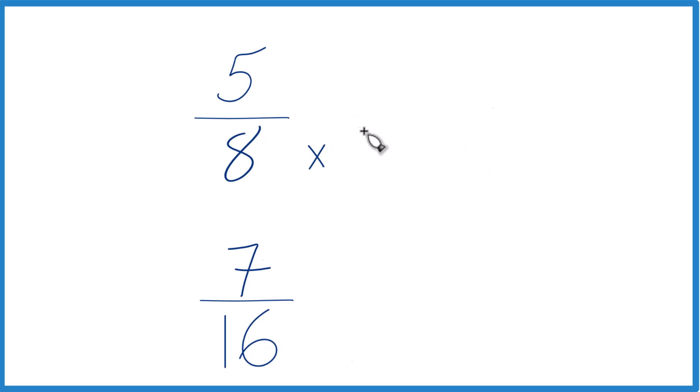8 times 2, that would equal 16. So, then we'd have a denominator of 16 for both of these. But we can't just multiply the denominator by 2. We also have to multiply the numerator by 2. 5 times 2, that's 10. And 10 sixteenths and 5 eighths, they're equivalent. They have the same value.